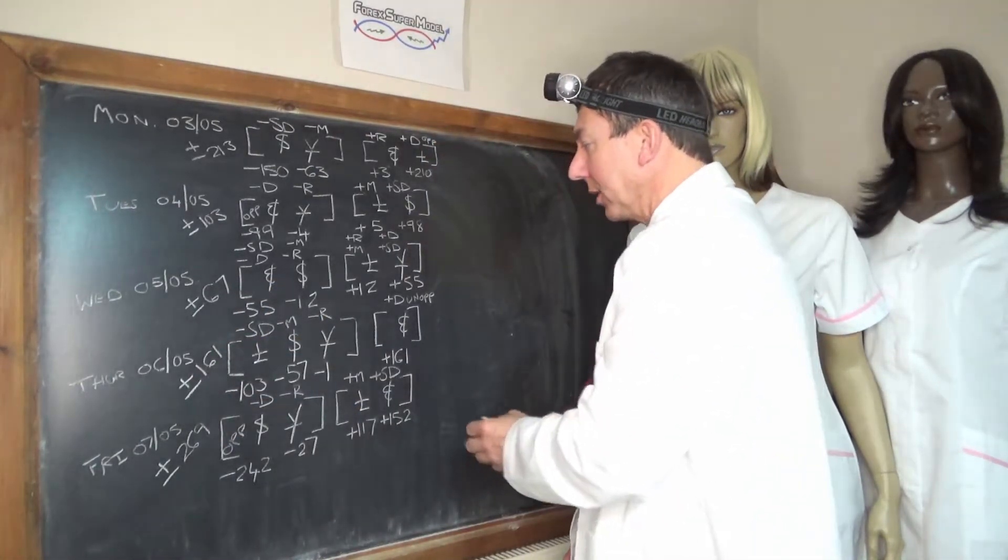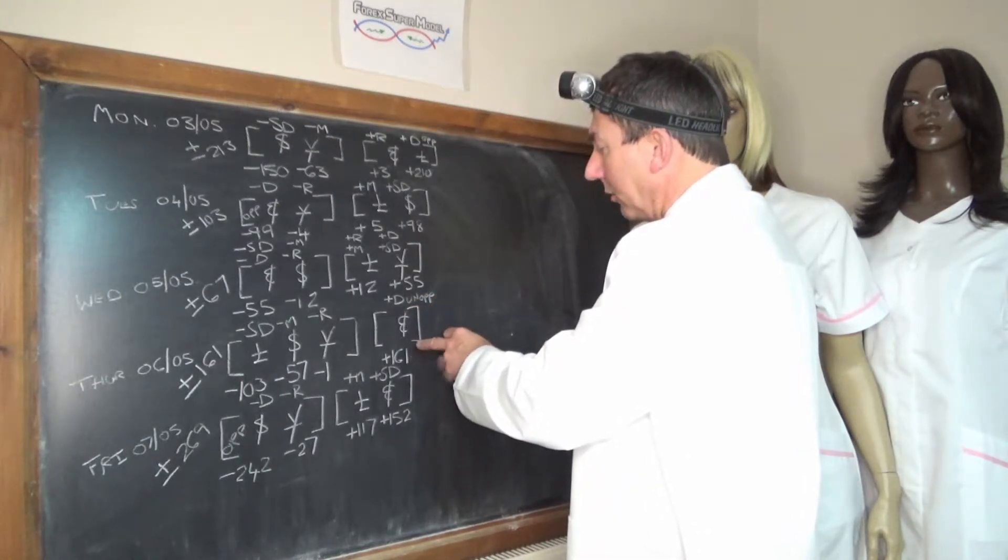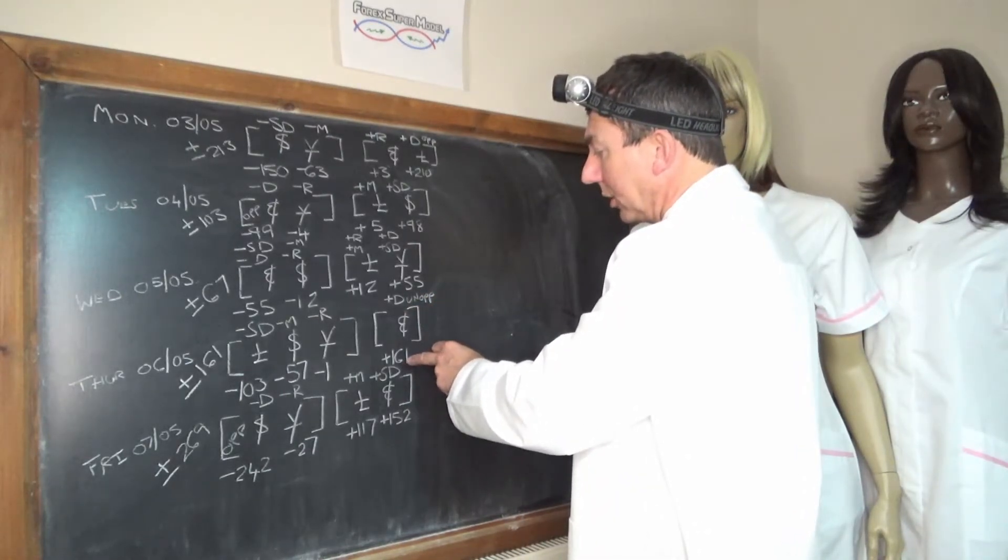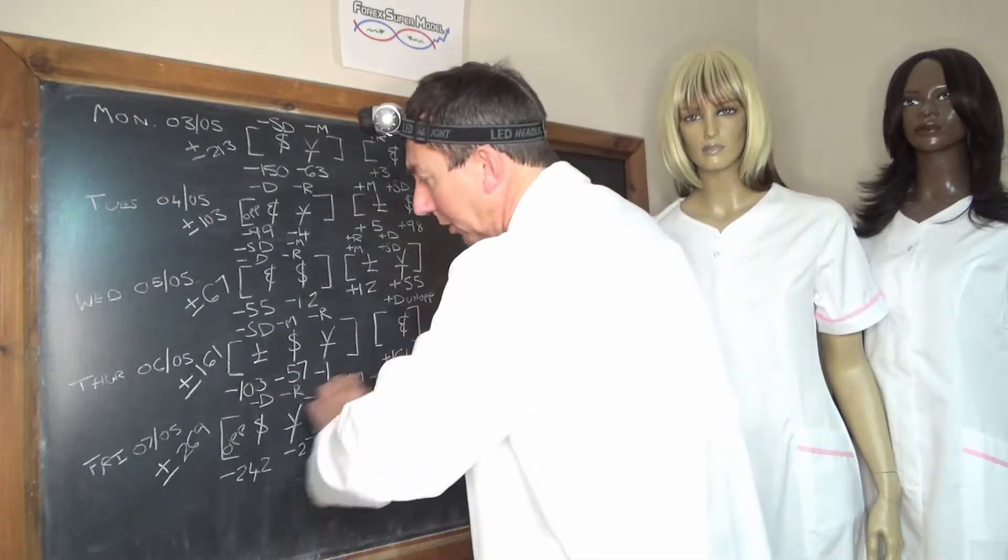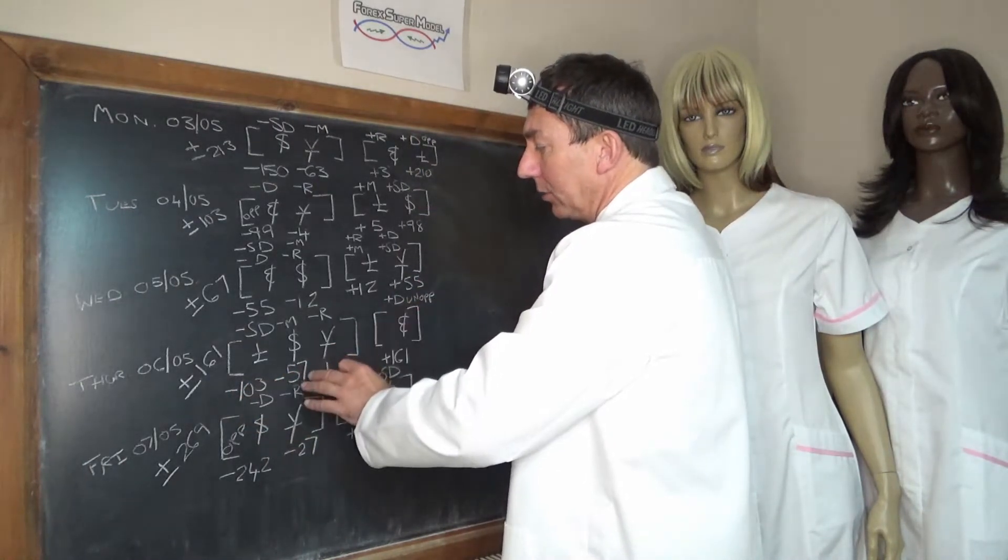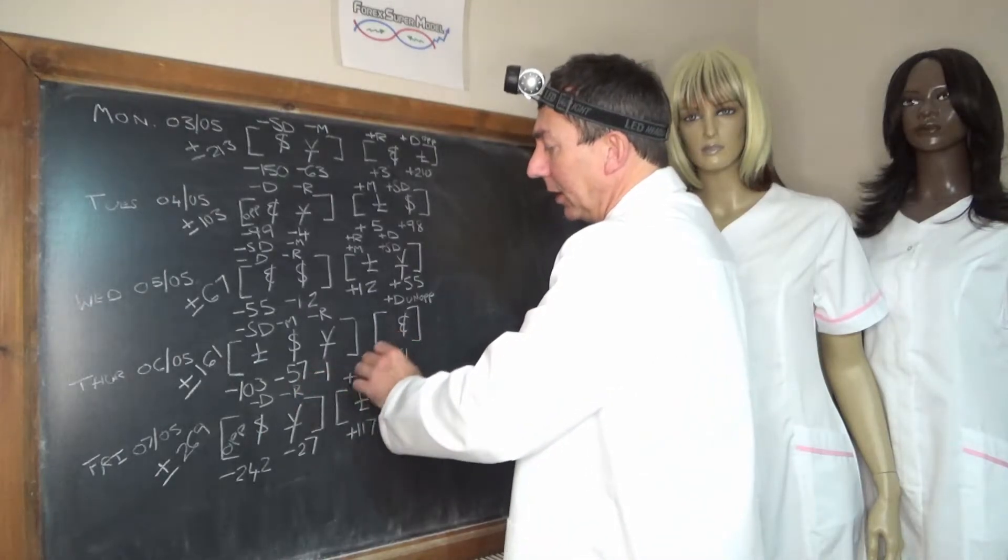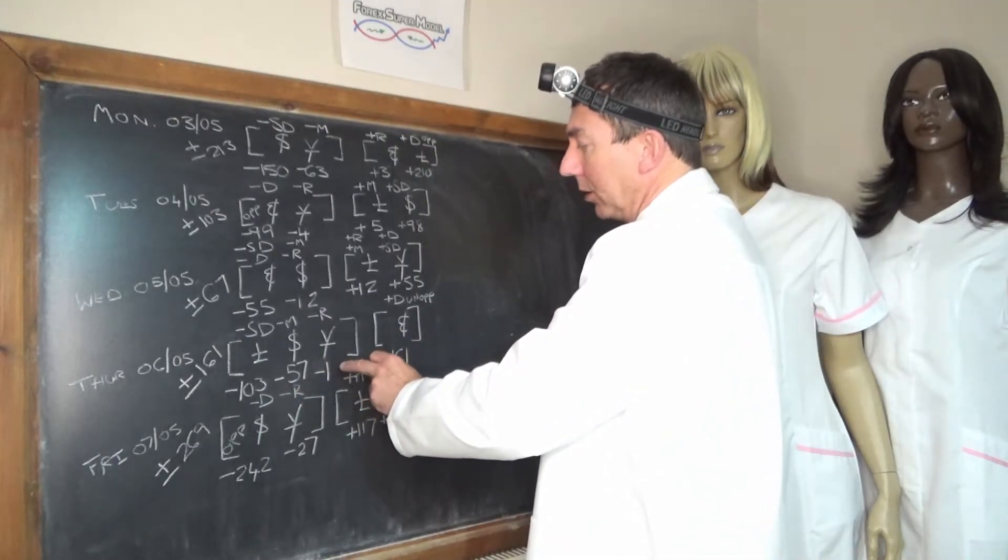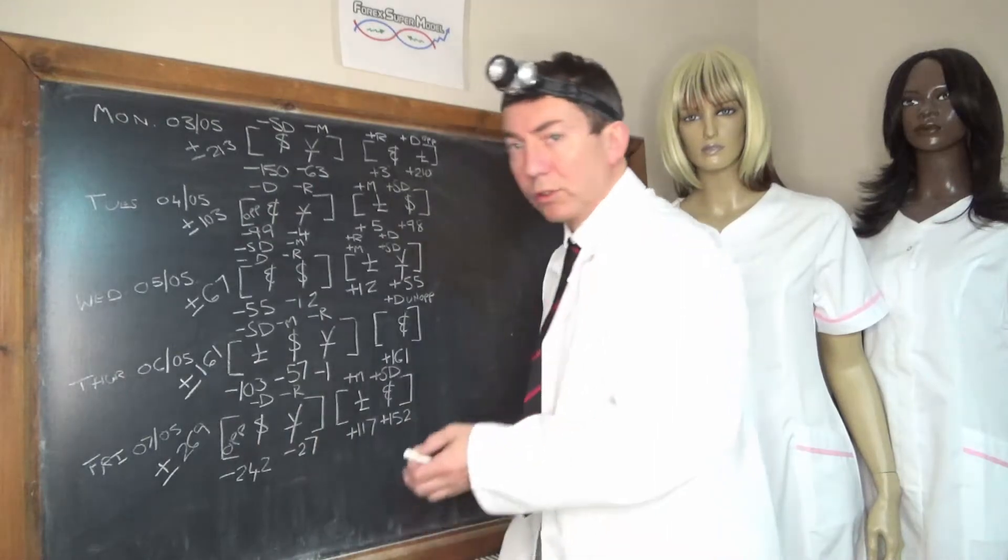Thursday the 6th, we've got a positive unopposed driver in the Euro plus 161, no back door flows. The opposing negative flows mainly coming out of the pound at minus 103, out of the dollar at minus 57, and the Yen was the negative rock at minus 1. Activity plus or minus 161.